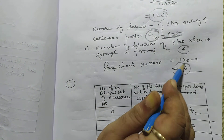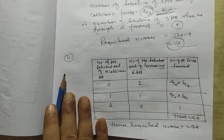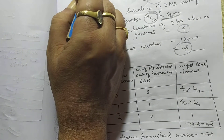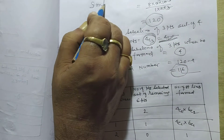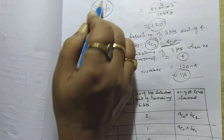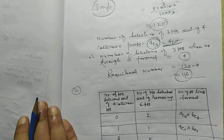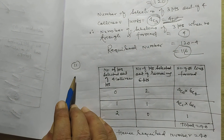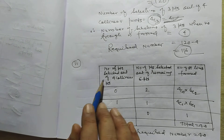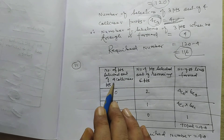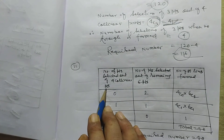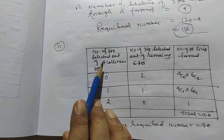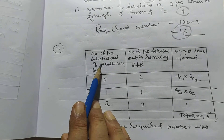In this way, we get 116 triangles. This method is very very important. Now I want to discuss sub-problem number 2: finding the number of straight lines formed by the 10 points, of which 4 are collinear.